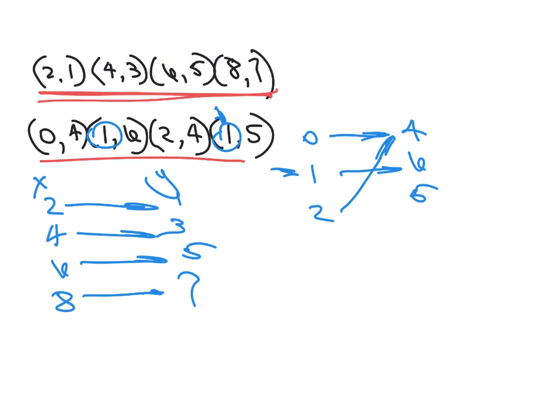Okay. That means it's not a function because 1 maps to two values over here. Whenever that happens, whenever an x goes to two different places, it's not a function.